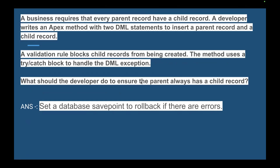The next scenario: a business requires that every parent record has a child record. A developer writes an Apex method with two DML statements to insert a parent and child record, but a validation rule blocks the child from being created. The method uses a try-catch block. The answer is: set a Database Savepoint before the DML, and if an error occurs, rollback to that savepoint so the whole transaction is rolled back.